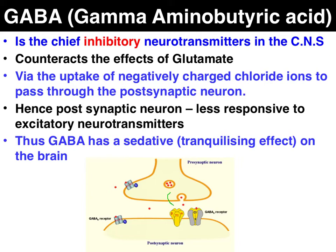When GABA is released by the presynaptic neuron, it binds with specialised receptor sites on the postsynaptic neuron, which enables the uptake of negatively charged chloride ions to enter the postsynaptic neuron. This makes the postsynaptic neuron less responsive to a variety of excitatory neurotransmitters, such as glutamate, adrenaline, and noradrenaline. So GABA has a relaxing, sedative effect on the brain.